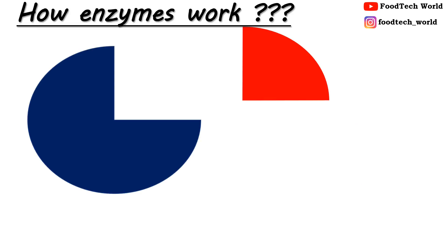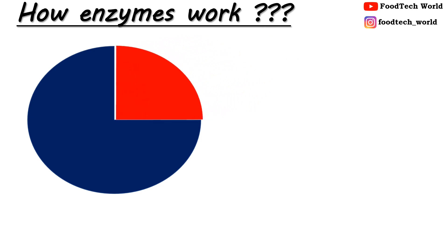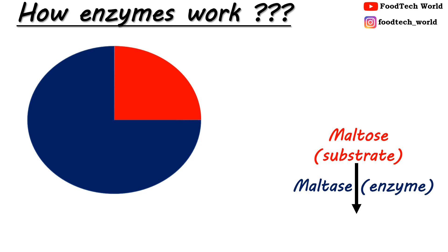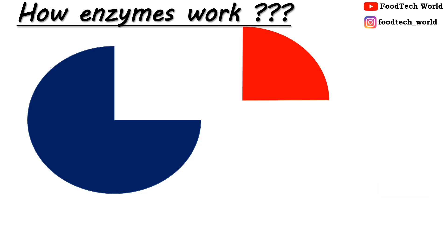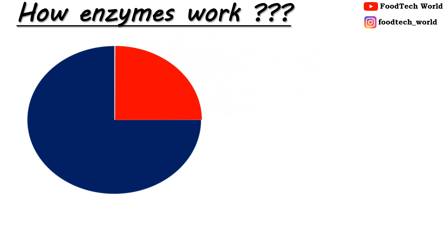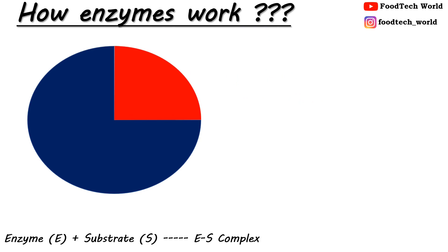Substrates are the molecules upon which an enzyme acts. For example, maltase is an enzyme that acts upon maltose. Maltose is a sugar which acts as a substrate for the maltase enzyme. When maltase acts upon maltose, it produces 2 glucose units. The mechanism of enzyme action is based on a chemical reaction where the enzyme binds to the substrate molecule, followed by formation of an enzyme-substrate complex, or ES complex. The enzyme-substrate complex is also known as the transition state complex.